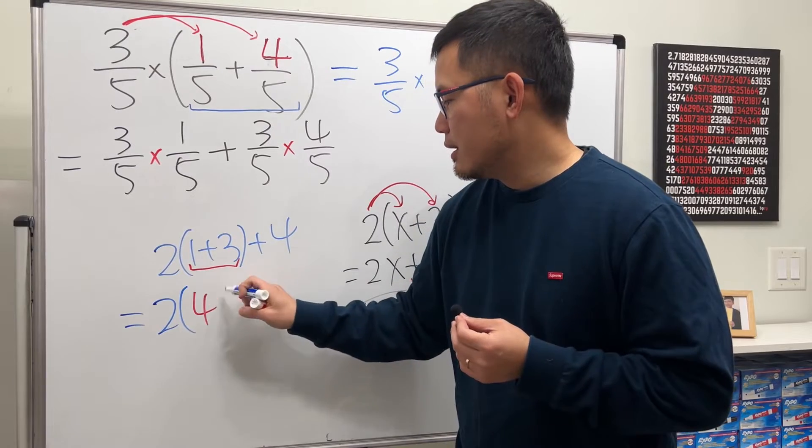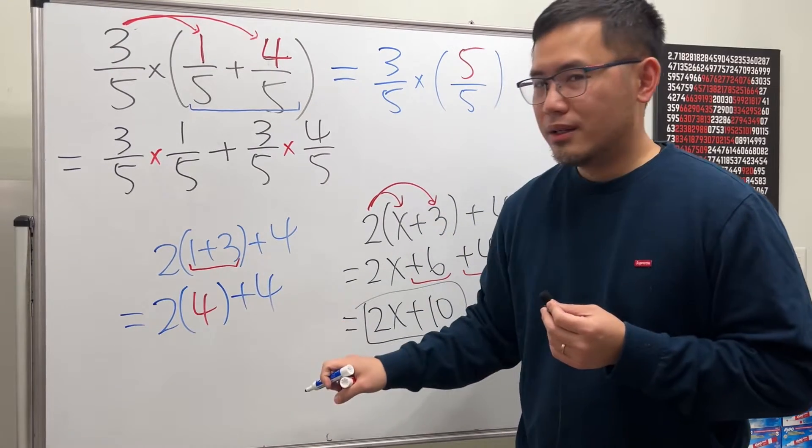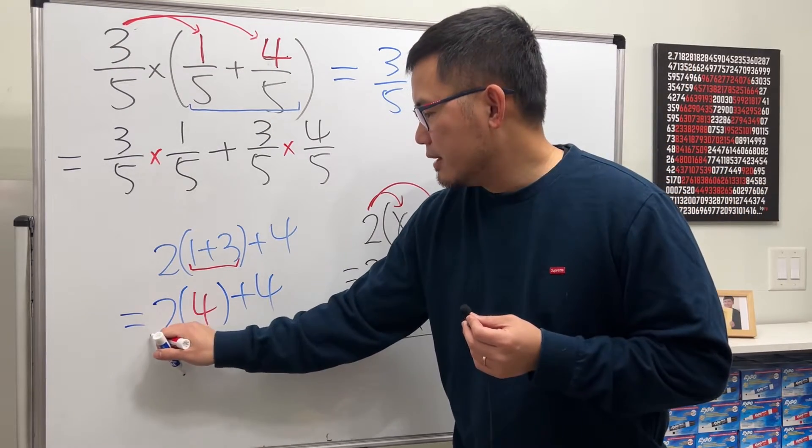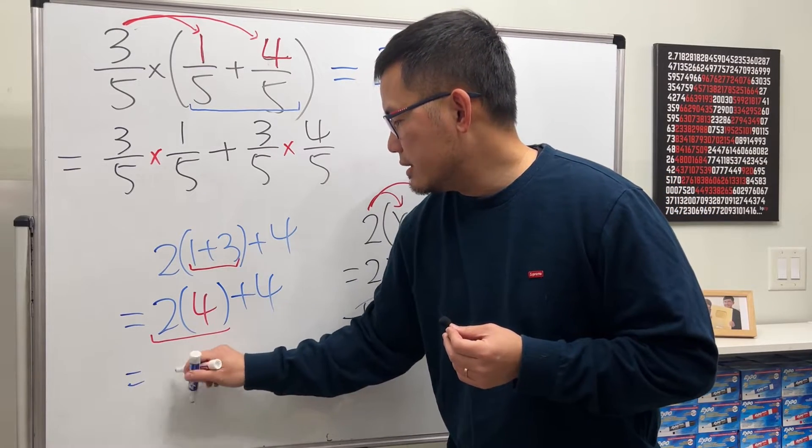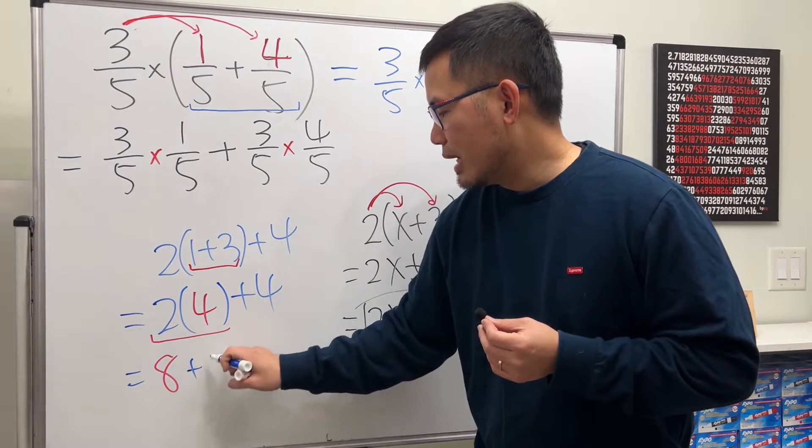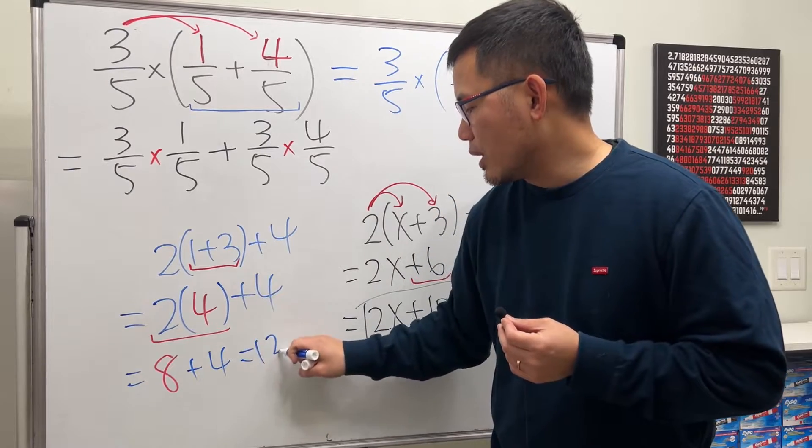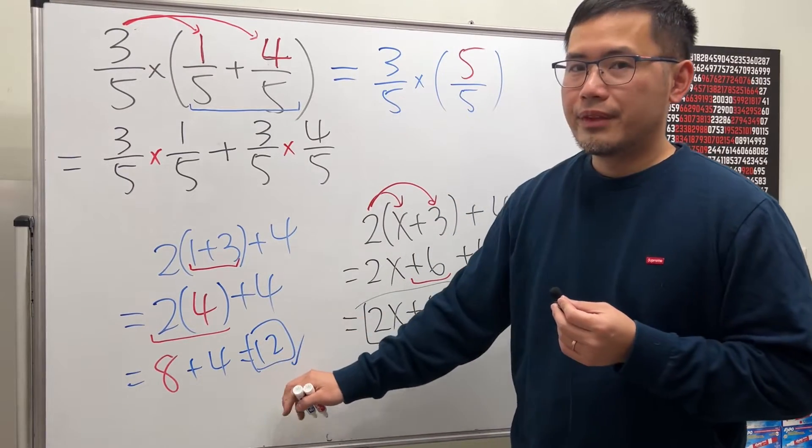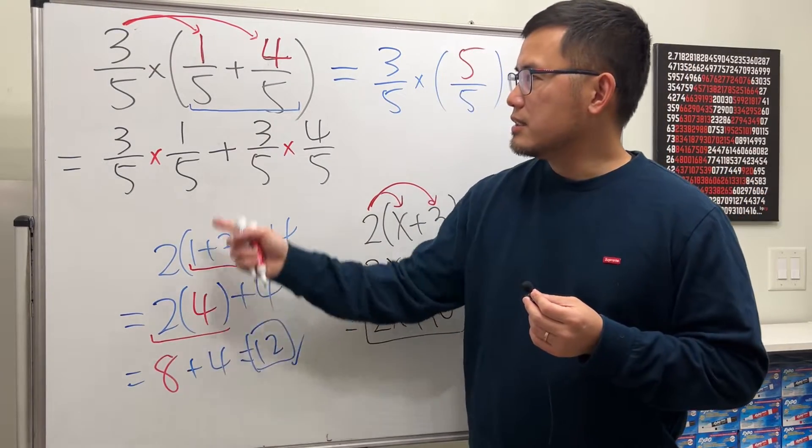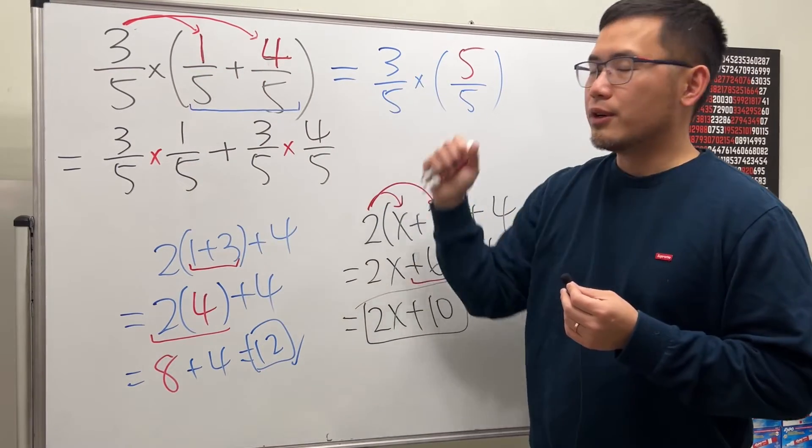So, 2 times 4, and then after that, we add 4. And then you work this out. This is the same as 2 times 4, which is 8. And then after that, you add 4. Final answer, you get 12. Just like that. So, this is exactly like what this question is. Just work out the inside first.